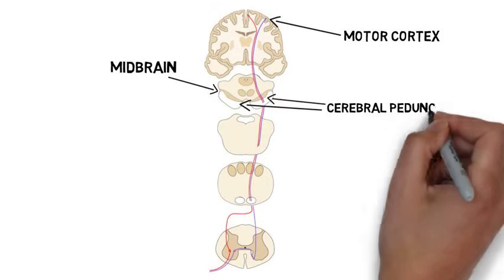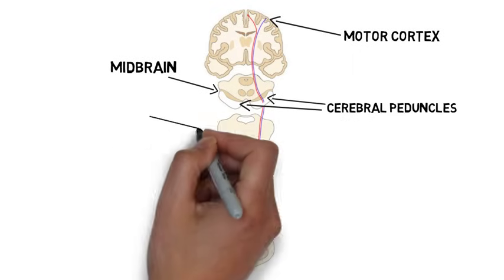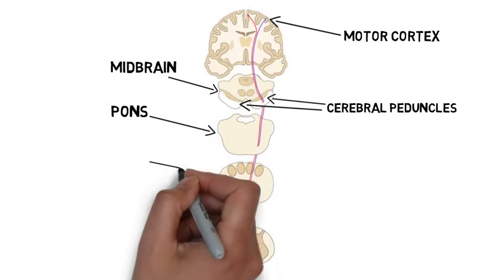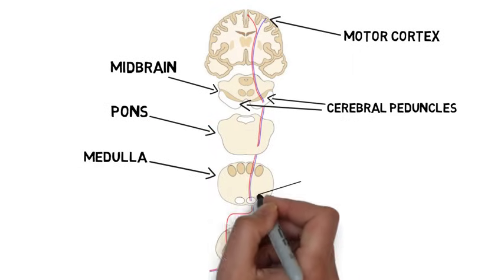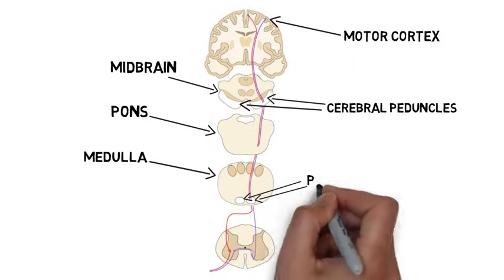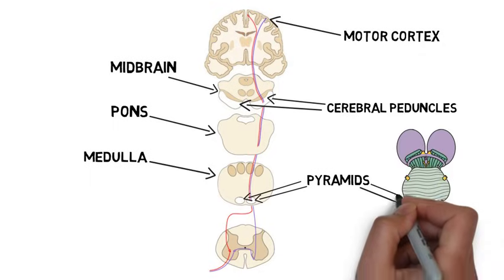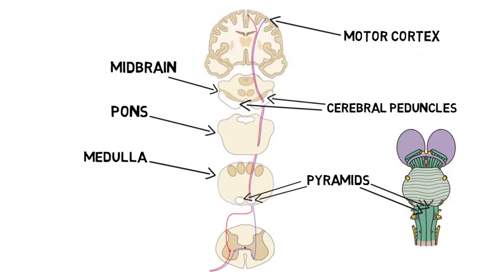The tract continues down into the medulla, where the fibers form two bundles known as the pyramids, which create visible ridges on the exterior surface of the brainstem.